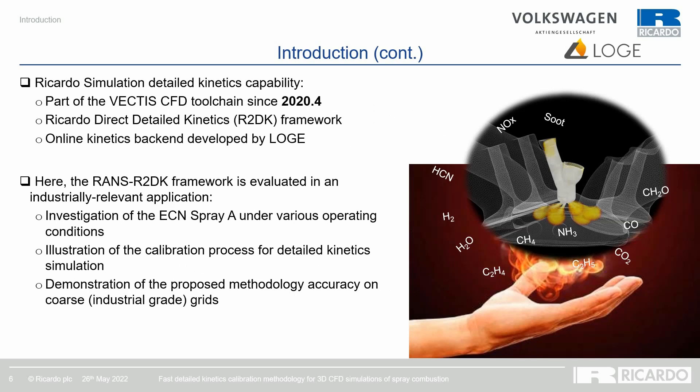The detailed kinetics capability has been part of the Vectis toolchain since December 2020 with the 2020.4 release, with the introduction of the Ricardo Direct Detail Kinetics, or R2DK framework, built around the Loggi backend for on-the-fly chemistry computation. In this talk, the RANS R2DK framework implemented in Vectis is evaluated in an industrially relevant application, looking at the Engine Combustion Network Spray A and various operating conditions, aiming to illustrate the calibration process for detailed kinetics and demonstrate the proposed methodology's accuracy on coarse, industrial-grade computational grids.